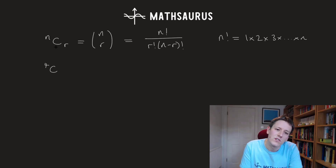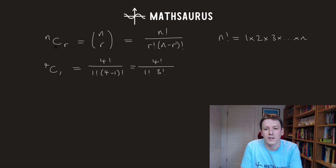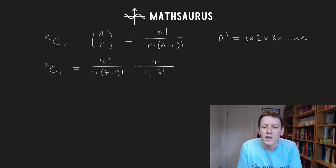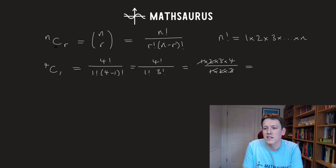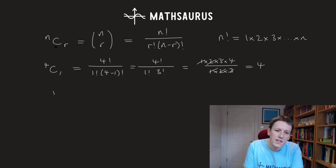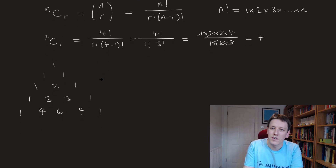For example, if I do 4 choose 1, this would be 4 factorial over 1 factorial times 4 minus 1 factorial, which is 4 factorial over 1 factorial times 3 factorial. Notice how the numbers on the bottom always add up to give the number on the top. This is just 1 times 2 times 3 times 4 over 1 times 2 times 3, so we get cancellation and we get 4. Looking at Pascal's Triangle: 1, 1 1, 1 2 1, 1 3 3 1, 1 4 6 4 1 — we do see that there is a 4 exactly there.